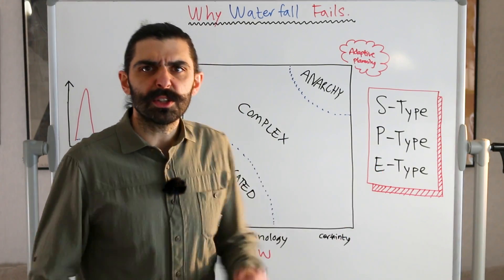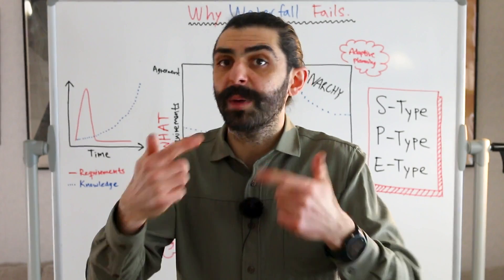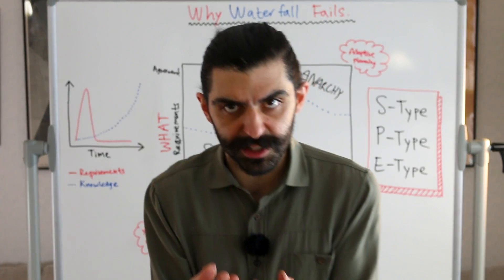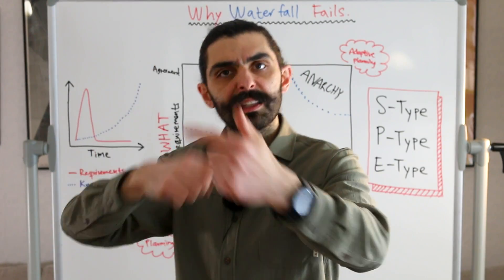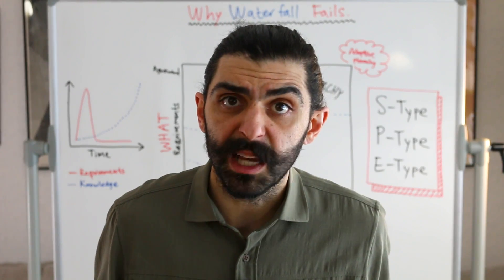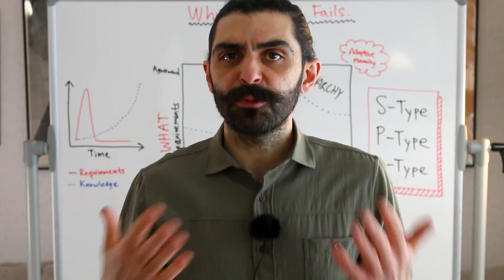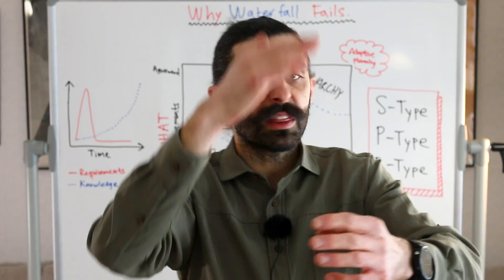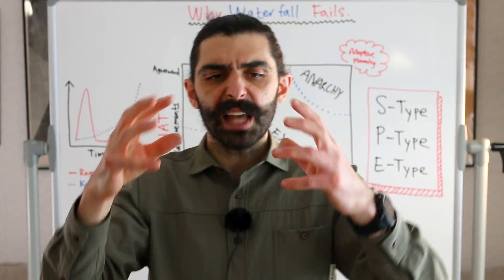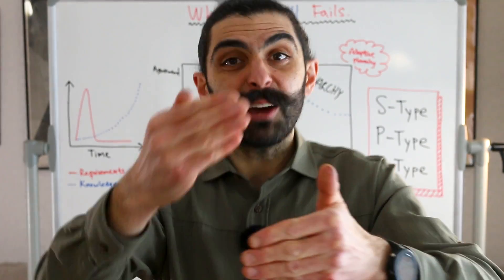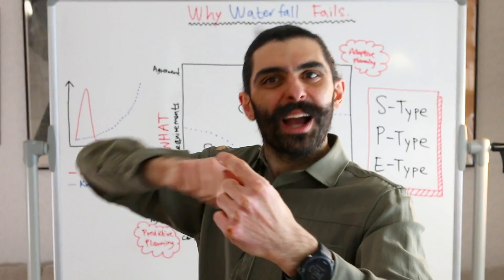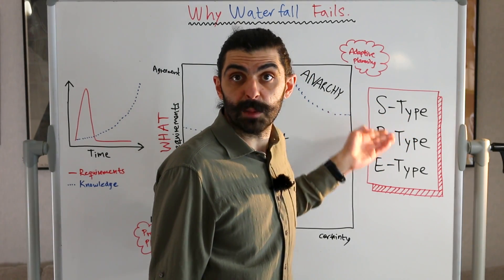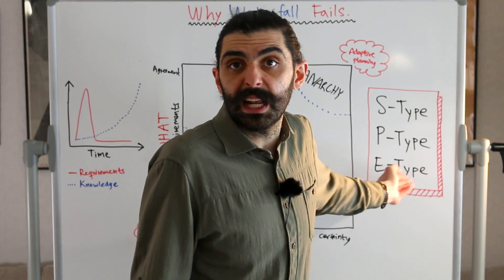E-type systems are systems that are embedded in reality. The easiest way to understand this is that the act of using the system results in pressure for the system to change. The very fact that we are using the system is what causes it to have to change — it's embedded in a feedback loop with reality. Think about social media platforms. It isn't really possible to specify what the system should do upfront, because as we embed the product in reality and see actual usage, only then do we get feedback to figure out what we probably actually should have built. Almost all systems are E-type systems.